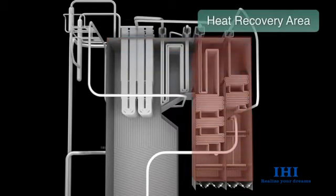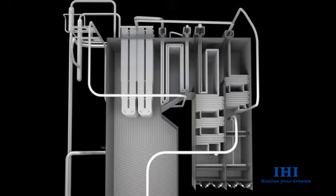The steam flows through the side walls and partition wall of the heat recovery area. It is then sent to the superheater section.